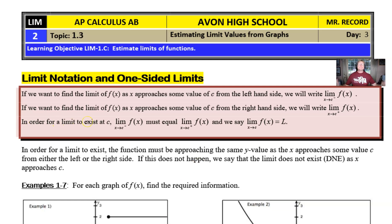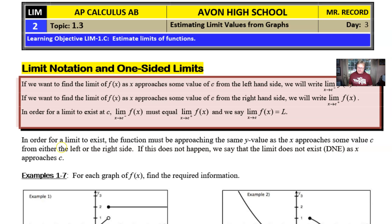In order for the two-sided limit to exist, the limit from the left must equal the limit from the right — they have to be the same value, which we'll call L for limit. In order for a limit to exist, the function must be approaching the same y-value as x approaches c from either the left or the right. If that does not happen, we say the limit does not exist — you can abbreviate that as DNE.